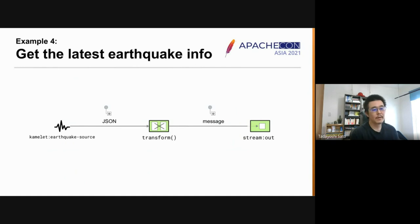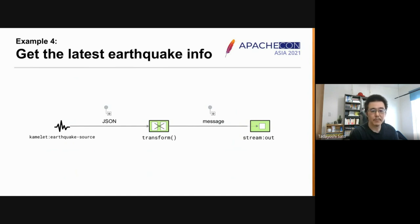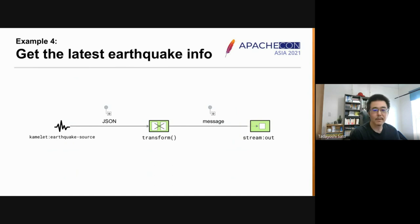So this is the final example. Kamelet is the best fit for integration scripting because it brings higher-level, more coarse-grained integration building blocks than primitive components, endpoints, and data formats. So if you can find an appropriate Kamelet, you can get the job done much faster. Or you can go even further with integration scripting.